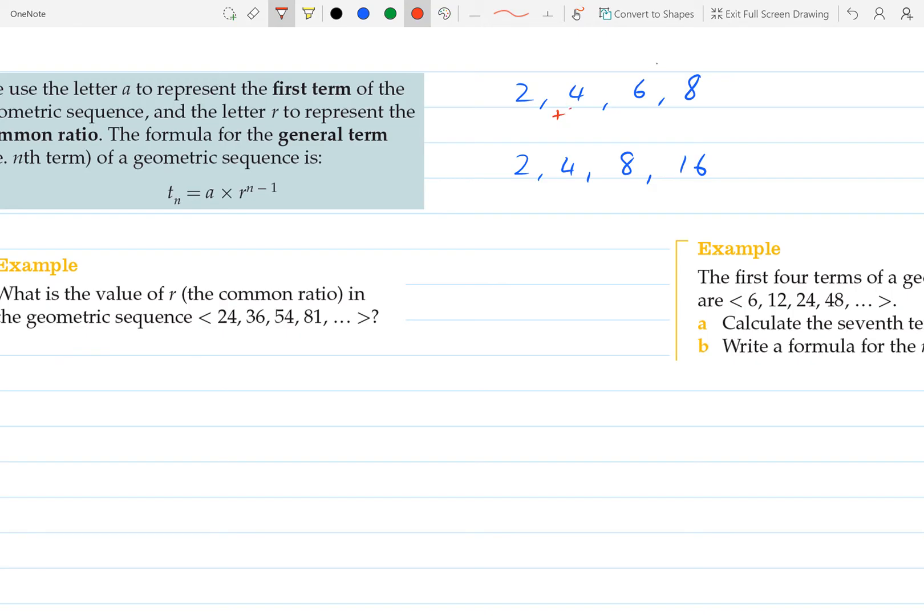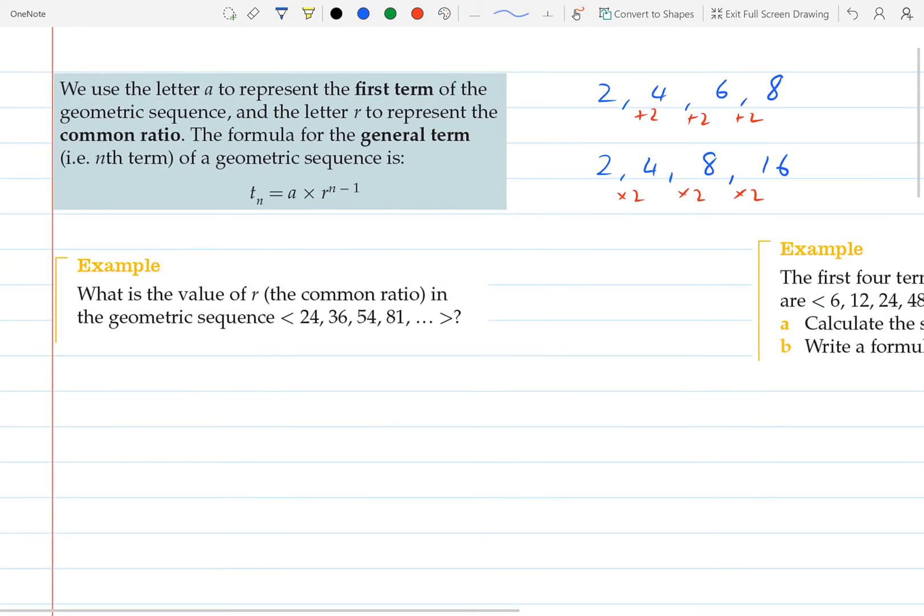like 2, 4, 6, 8, a geometric sequence goes up by some multiple that you're multiplying it by. So for instance, we could have 2, 4, 8, 16. So instead of adding 2 each time, like we do with an arithmetic sequence, in this one we're multiplying by 2 each time. And so you can see that that will give us quite a different result for our sequence.